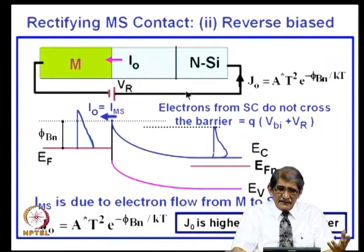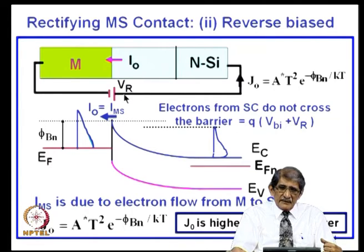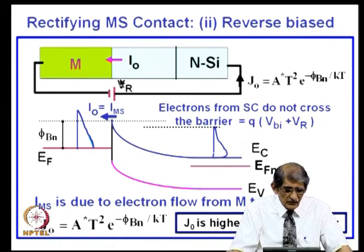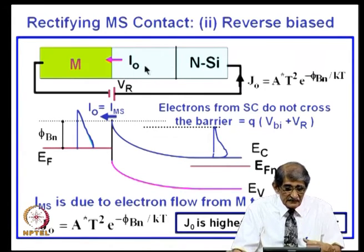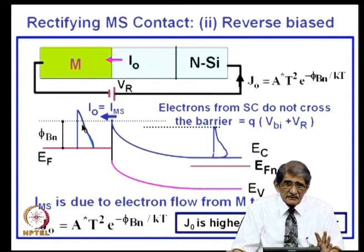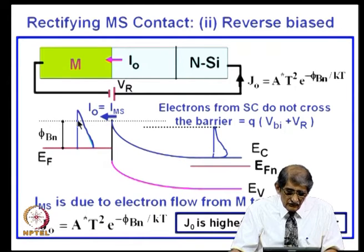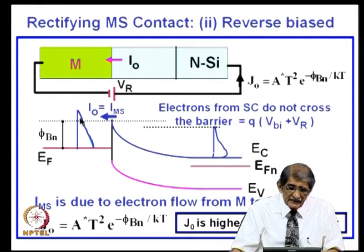The magnitude of current is decided by the barrier height φ_bn: J₀ = A* · T² · e^(−φ_bn/kT). This is similar to a p-n junction. In the p-n junction, reverse bias means n-side positive with respect to p-side; for metal/n-type semiconductor the same notation applies. Whatever bias you apply to this metal-semiconductor contact, the barrier φ_bn is not going to change. If the barrier is very low, almost all electrons are available for current flow; if the barrier is high, very little current flows.